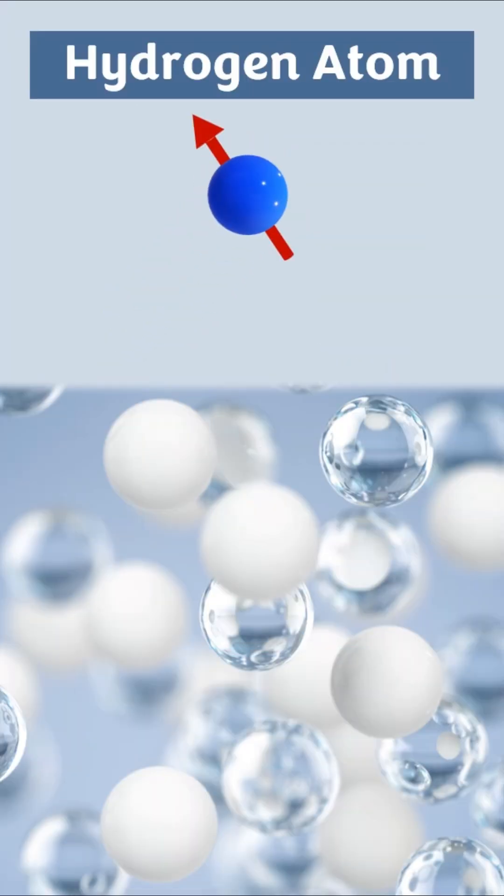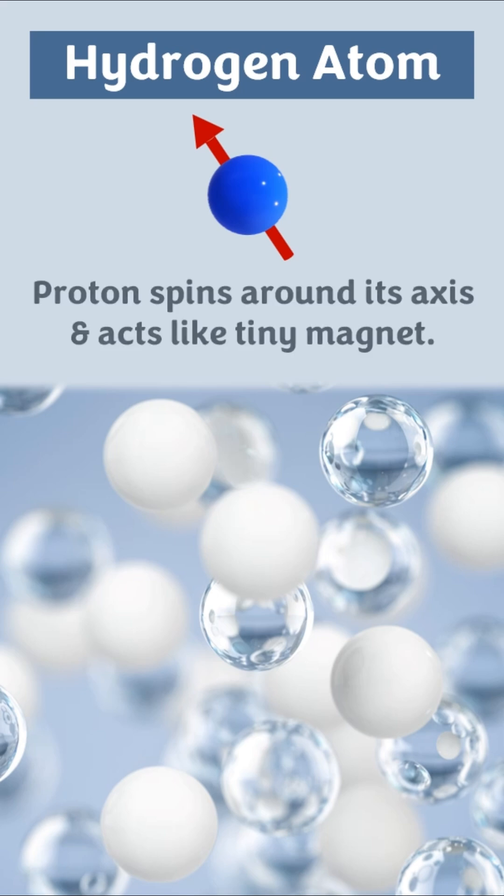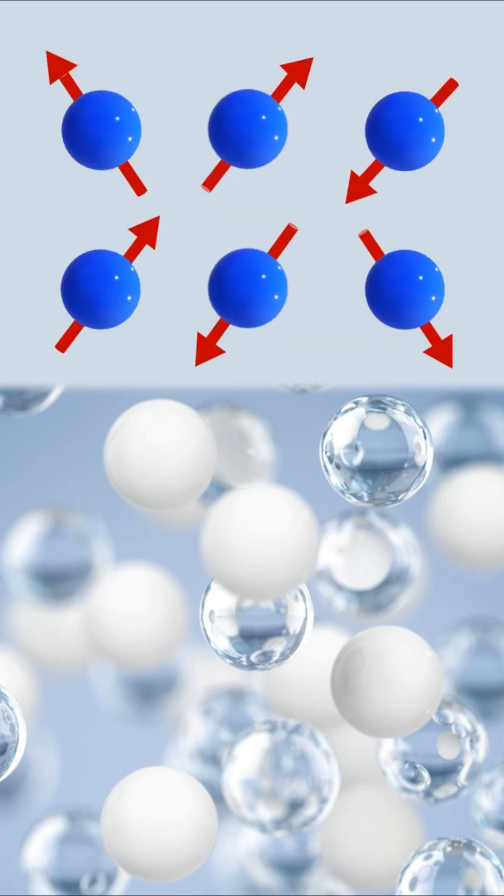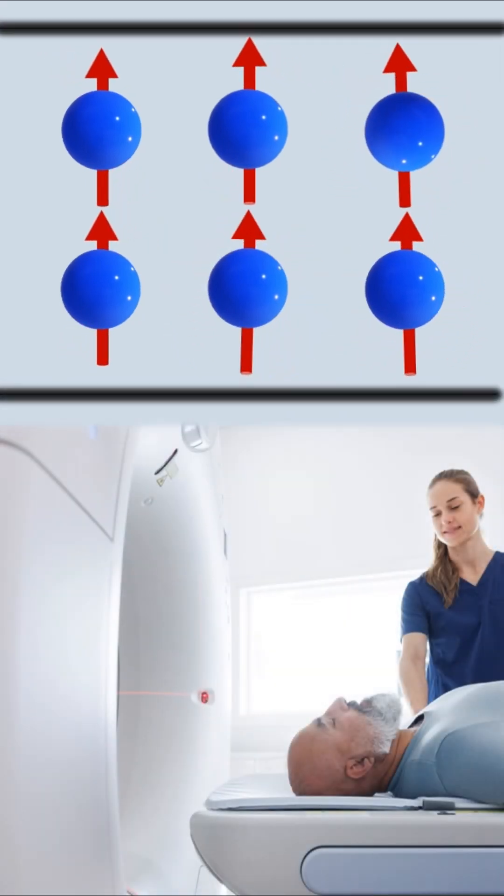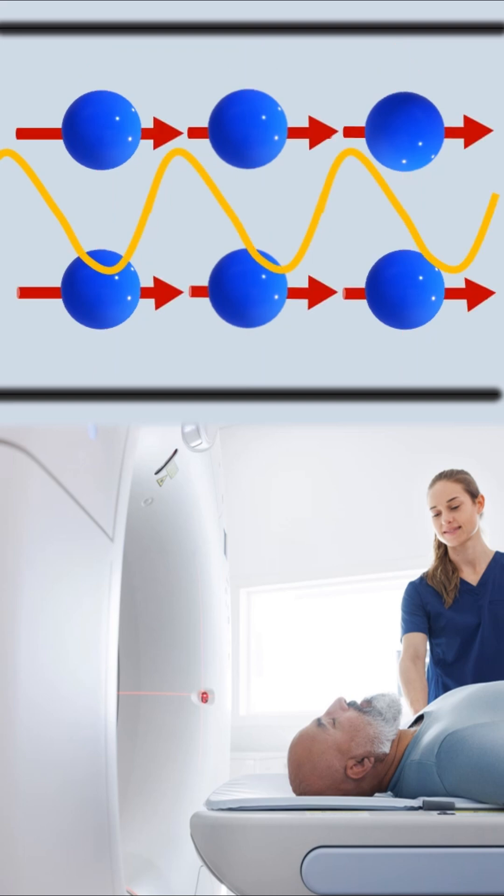Spinning of protons in each hydrogen atom makes it a tiny magnet. The axis of their spin are randomly aligned, but when entered into the strong magnetic field of the MRI machine, they align with that field. A radio wave of the same frequency as the motion of the protons is passed through and changes their alignment.